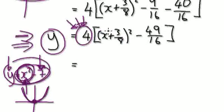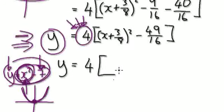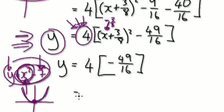If this whole squared thing here is 0 — which happens when you stick minus 3 over 8 into x, because minus 3 over 8 plus 3 over 8 gives you 0 — then this whole squared part is 0. What would be left would be minus 49 over 16. The lowest possible value for y would be 4 times this, which is 4 multiplied by minus 49 over 16.